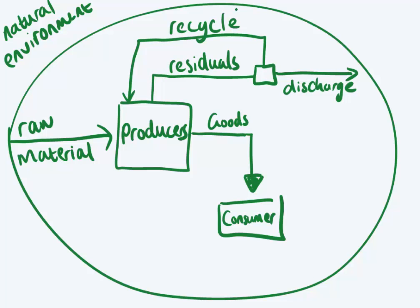We might see something like this in a glass factory. For example, they take sand out of the environment to make glass with. The producer — the glass factory — makes glassware, and this glassware goes to us, the consumer. If there are sand leftovers or glass shards, then it's a residual. Some of it they can't use and discard into the environment; others they can recycle for use in future production.